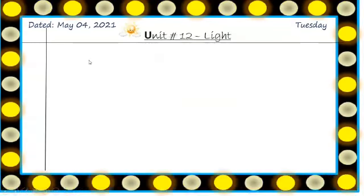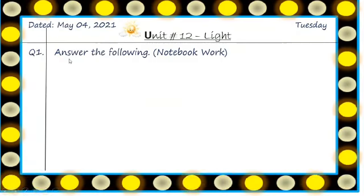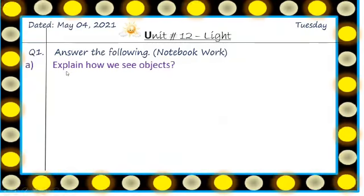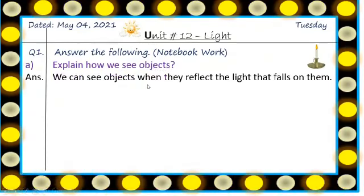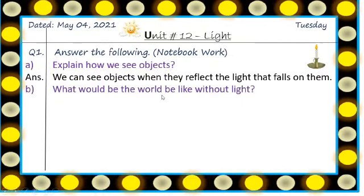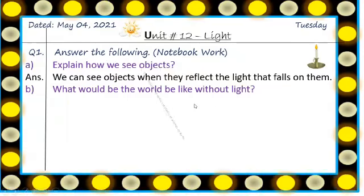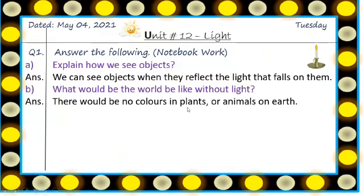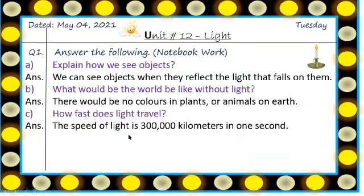That will be all for today's reading session. Now some notebook work from Unit 12 — Light. Answer the following questions in your notebook. First question: explain how we see objects. We can see objects when they reflect the light that falls on them. Second question: what would the world be like without light? There would be no colors, no plants, or animals on earth. Third question: how fast does light travel? The speed of light is 300,000 kilometers in one second.